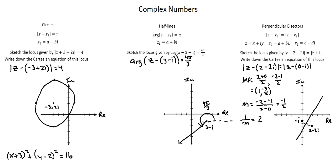Now, looking back at our circles example, I've labeled the center as negative 3 plus 2i. In the half lines example, I've labeled the starting point as 3 minus i. And in the perpendicular bisector example, I've labeled z1 as 2 minus 2i and z2 as negative i.